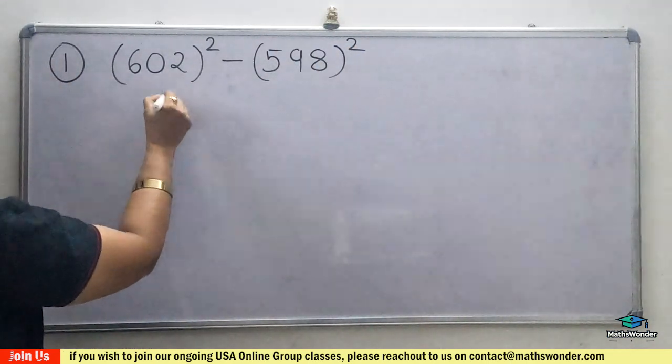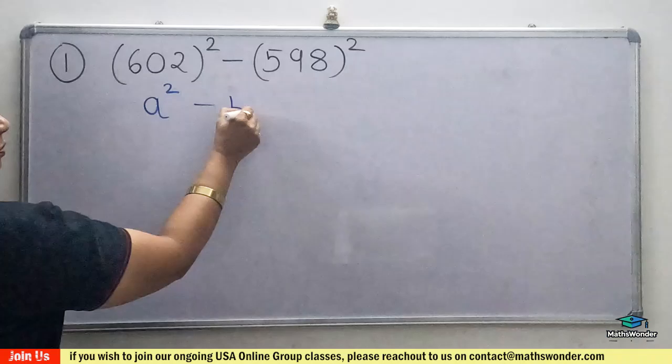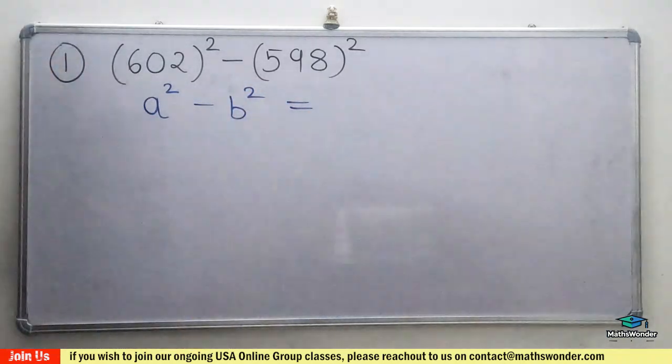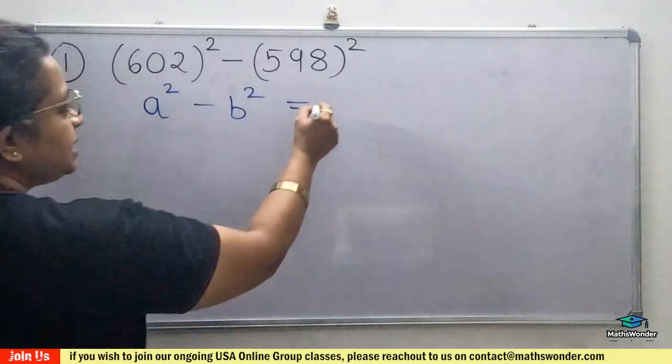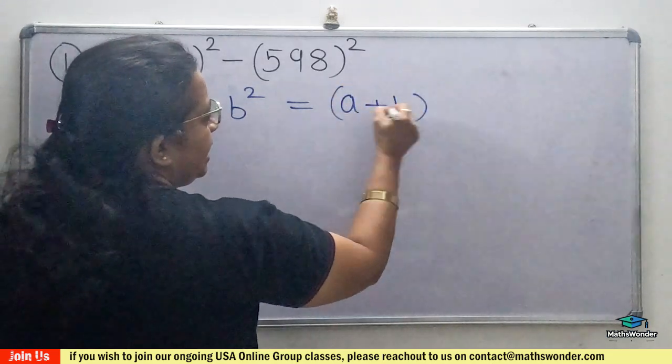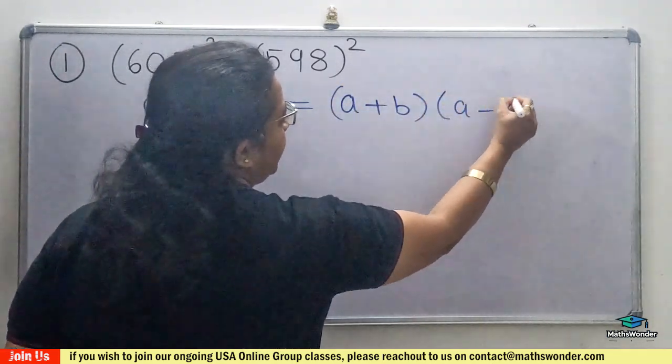As you can see here, it's an a square minus b square identity, we'll use it. So a square minus b square is a plus b times a minus b, as you know.